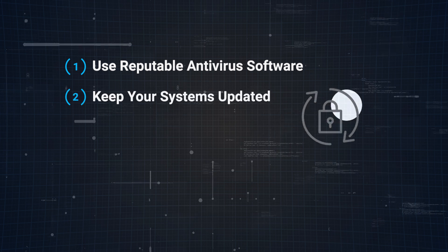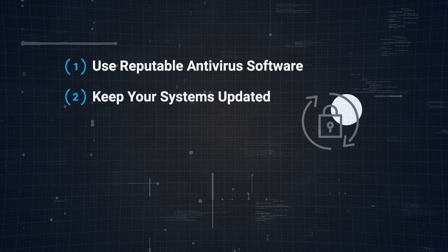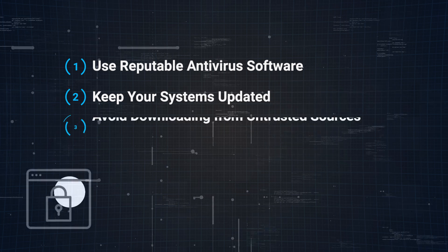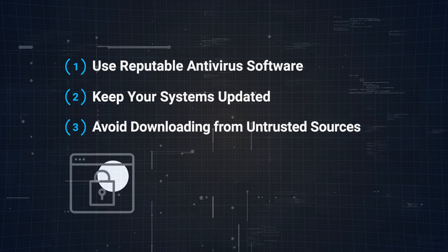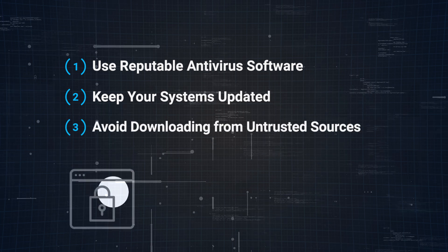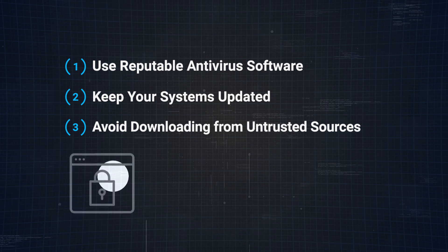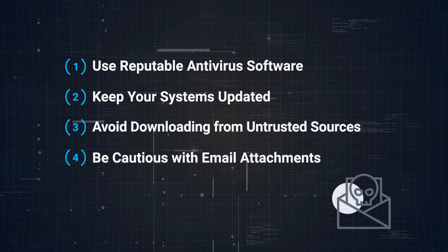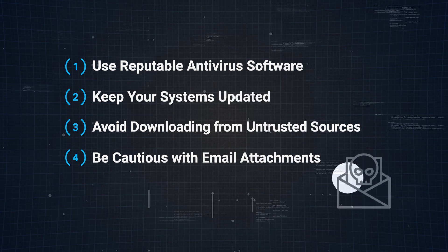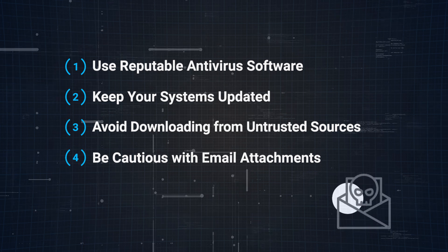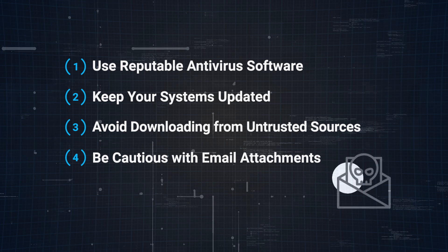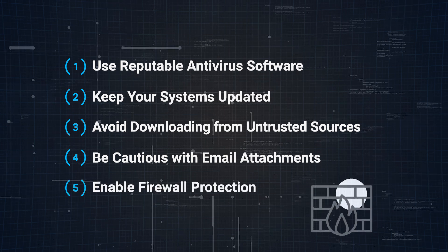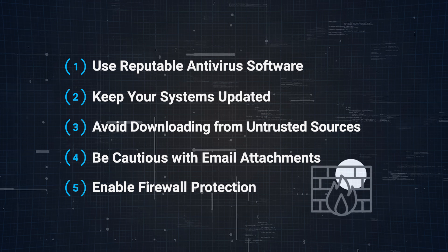Number three, avoid downloading from untrusted sources — only download software from reputable sources or official websites. Number four, be cautious with email attachments — don't open attachments from unknown senders, and even if it appears to be from someone you know, verify it first if the attachment seems suspicious. And number five, enable firewall protection — use a firewall to block unauthorized access to your computer and network.